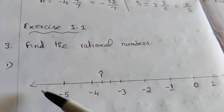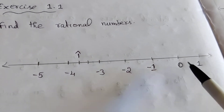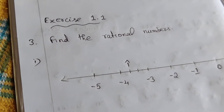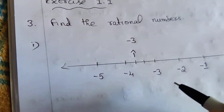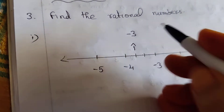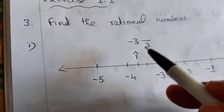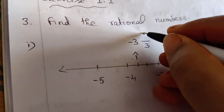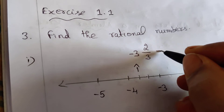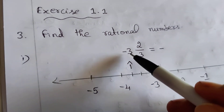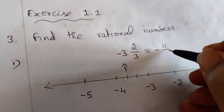Now let's find the rational number. Let's look at minus 3. How many equal parts are there? 1, 2, 3 — 3 equal parts. That's why we put the denominator number as 3. It's the second position, so it's 2. Minus 3 into 2 by 3. If we convert this to an improper fraction: 3 times 3 is 9, plus 2 is 11. So it is 11 by 3.